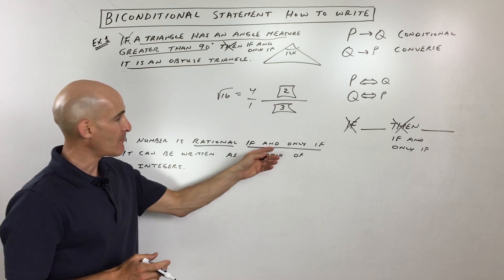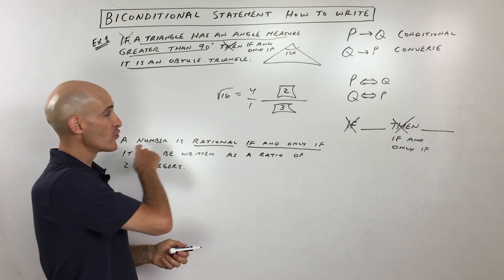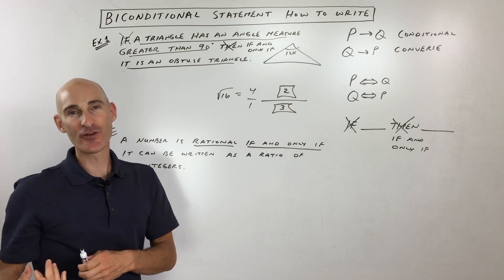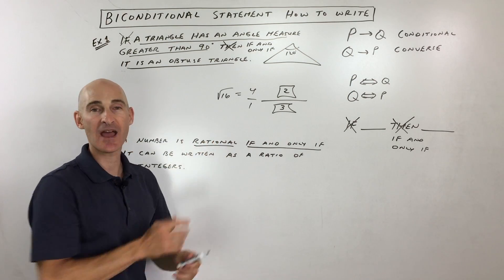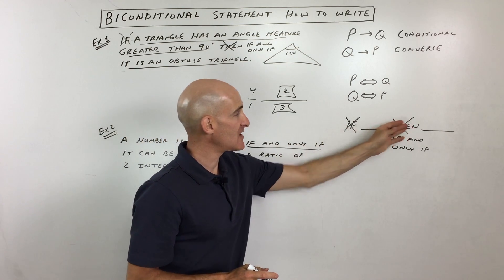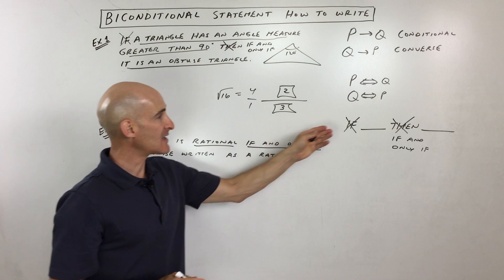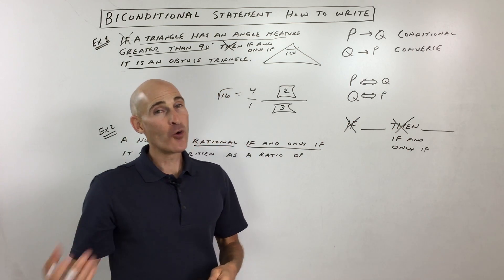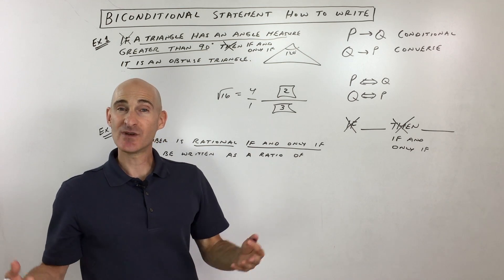You see how if we're given a biconditional, we know that it's going to be true forward and the converse. I like to say it like in reverse, backwards. But what we're doing is we're switching the hypothesis and the conclusion. Remember, conditional statements are if-then statements, but when you write a biconditional, you drop the if, you replace the then with if and only if.